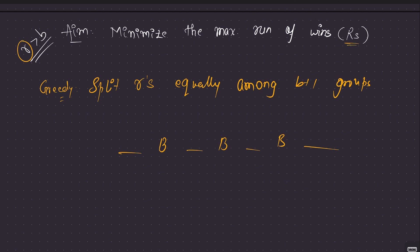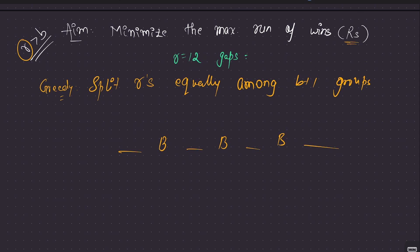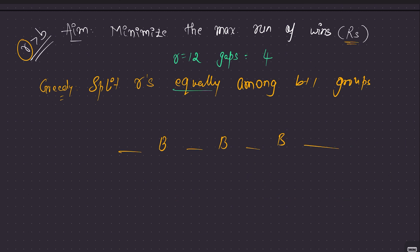If you split r's equally, you are sure the maximum number of wins is as small as possible. For example, if r equals 12 and you have 2 gaps (one b), put 6 here and 6 here — you cannot do better. If you have 3 gaps (two b's), split 12 by 3: put 4 here, 4 here, 4 here. If gaps equals 4 (three b's), put 3 here, 3 here, 3 here, 3 here — the best split, with maximum run of wins as small as possible.